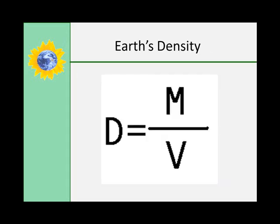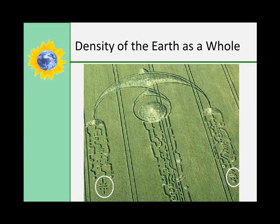To remind you about density, remember density is mass over volume, and the density measures the amount of material in a given space. And the units are in grams per cubic centimeter, or grams per milliliter. Earth's density as a whole is 5.5 grams per centimeter cubed.